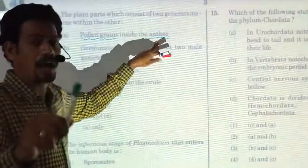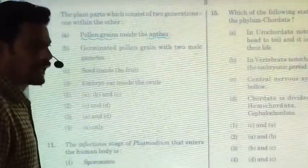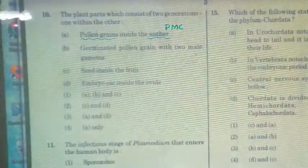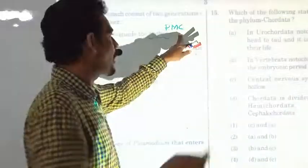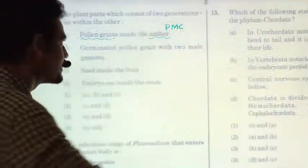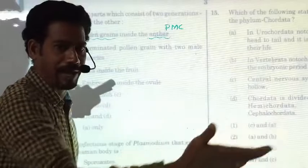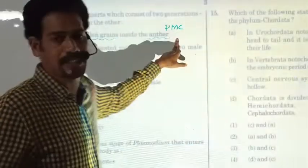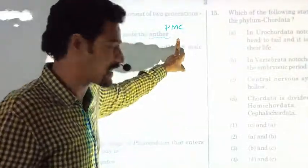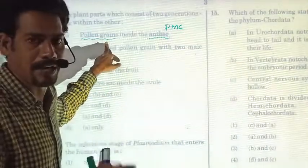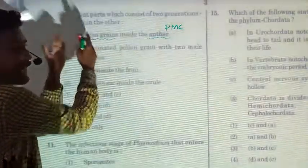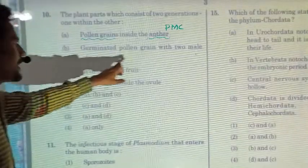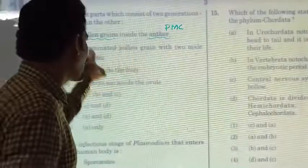Pollen mother cells (PMCs), also called microspore mother cells, represent the last cells of the sporophyte generation. When PMCs divide meiotically as meiocytes, they produce haploid microspores — the first cells of the gametophyte generation. The pollen grain itself represents the haploid gametophyte generation, and the anther represents the diploid sporophyte generation. Pollen grain within the anther contains both generations.